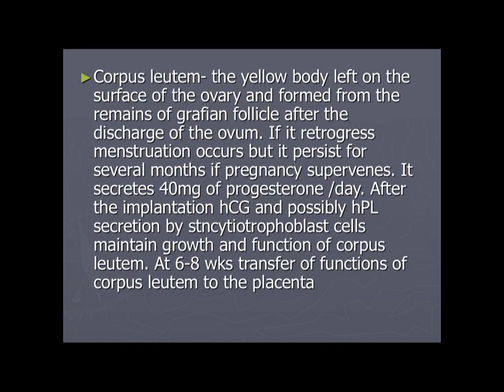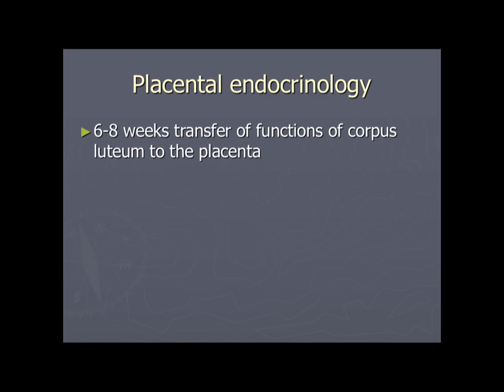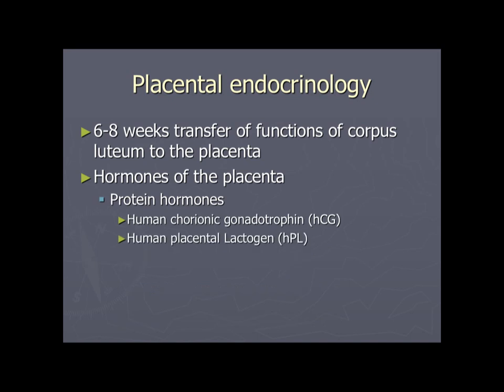Pancreas: insulin production increases. Corpus luteum: the yellow body formed from the remains of the Graafian follicle after ovulation. If it regresses, menstruation occurs; if pregnancy supervenes, it secretes 40 mg of progesterone per day after implantation. HCG and HPL secreted by syncytiotrophoblast cells maintain the corpus luteum. At 6–8 weeks, transfer of functions from the corpus luteum to the placenta occurs. Placental hormones: protein hormones (HCG and HPL) and steroid hormones (estrogen and progesterone).